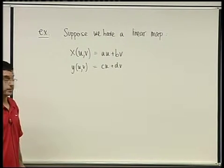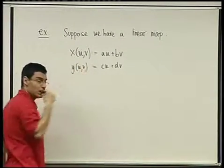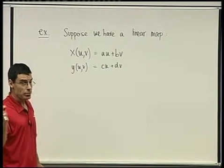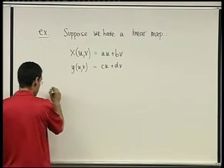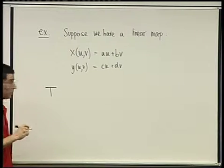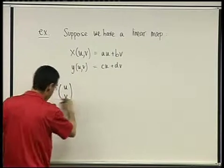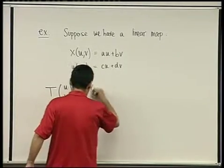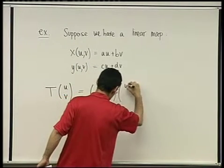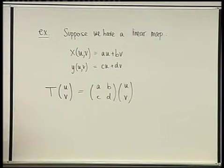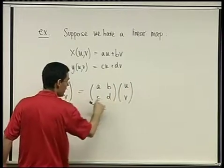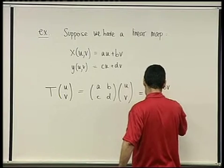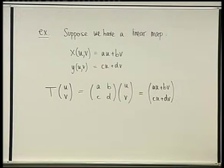This is a linear map — or in slightly more precise words from algebra, a linear transformation. Let's call it T. How does T act on (u,v)? We write it as the matrix [a, b; c, d] times [u; v]. What we get is au + bv for the first coordinate and cu + dv for the second coordinate. So xy = T(uv).